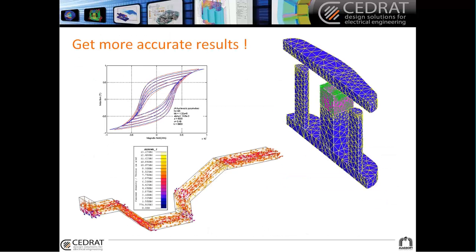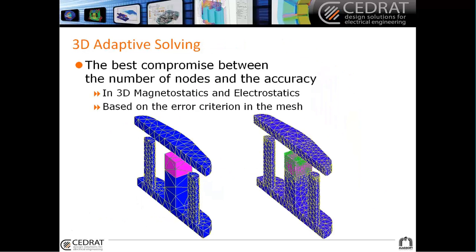Now more about getting more accurate results. I can present a first feature, which is the 3D adaptive solving. Before, we had already 2D adaptive solving in static and in steady state applications. Now we are able to do 3D adaptive solving in 3D magnetostatics and electrostatics. It means that when you solve your project, you can let Flux refine the mesh on the parts that need to be refined.